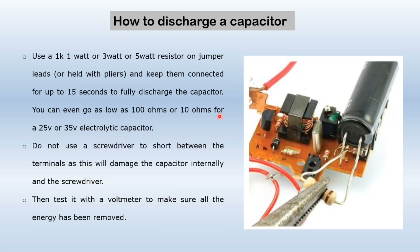Now, how to discharge a capacitor. Before testing a capacitor we should always discharge it, especially if it is an electrolytic capacitor. For discharging, we can use a 1 kilohm resistor of 1 watt, 3 watt, or 5 watt, or use jumper leads and keep them connected for up to 15 seconds to fully discharge the capacitor. You can even use as low as 100 ohm or 10 ohm resistors for discharging a 25 volt or 35 volt electrolytic capacitor. Never use a screwdriver to short the terminals of the capacitor as it may damage it. Once discharged, test it with a voltmeter.